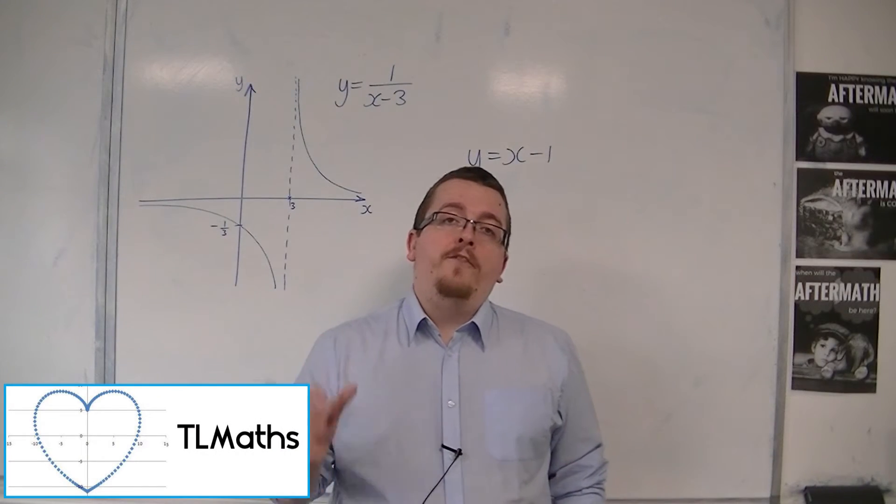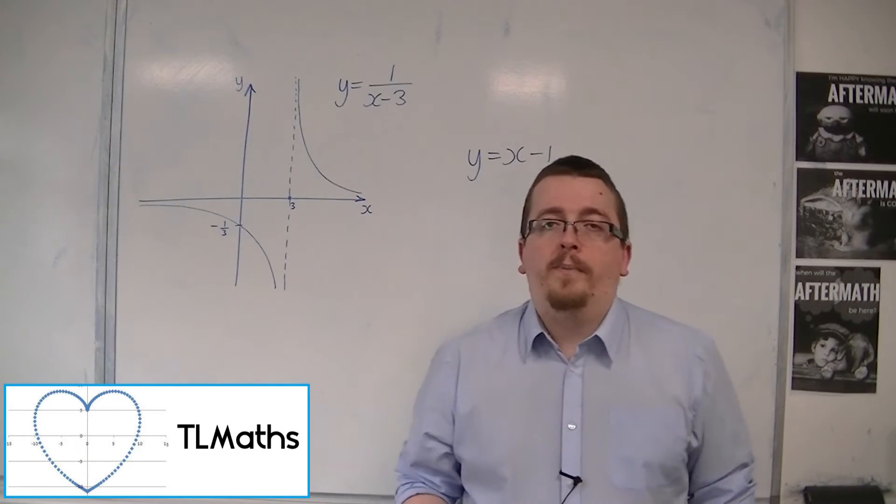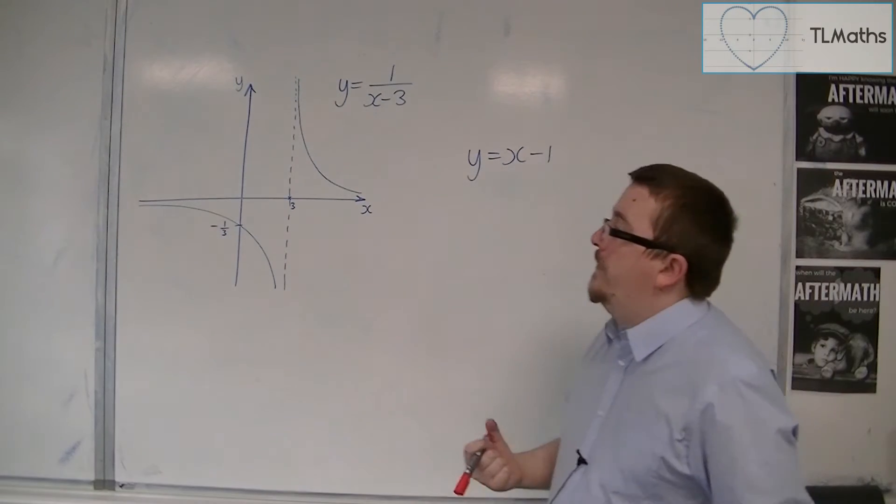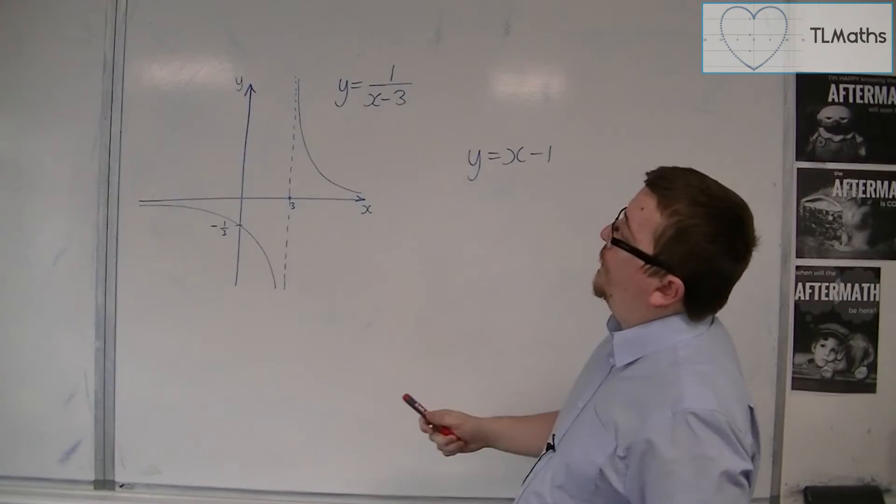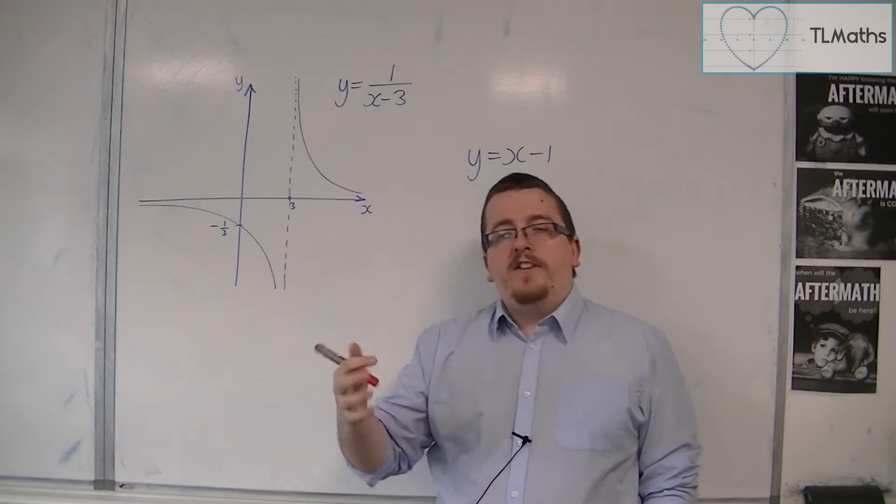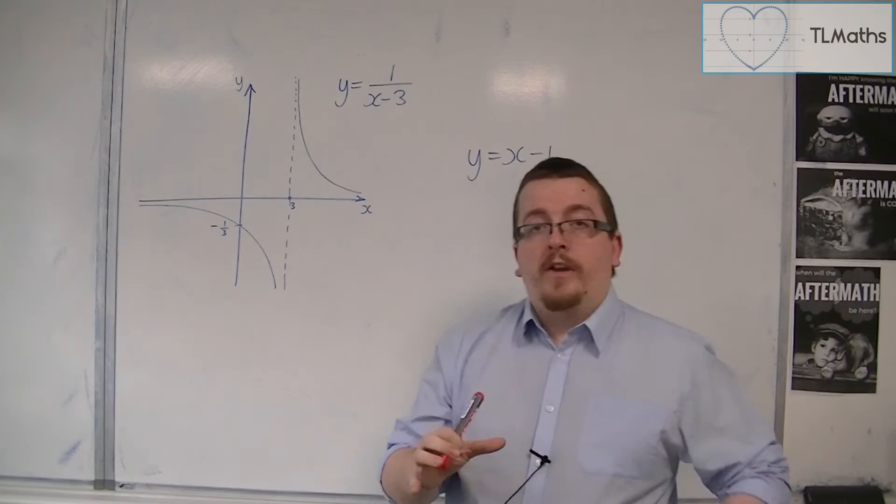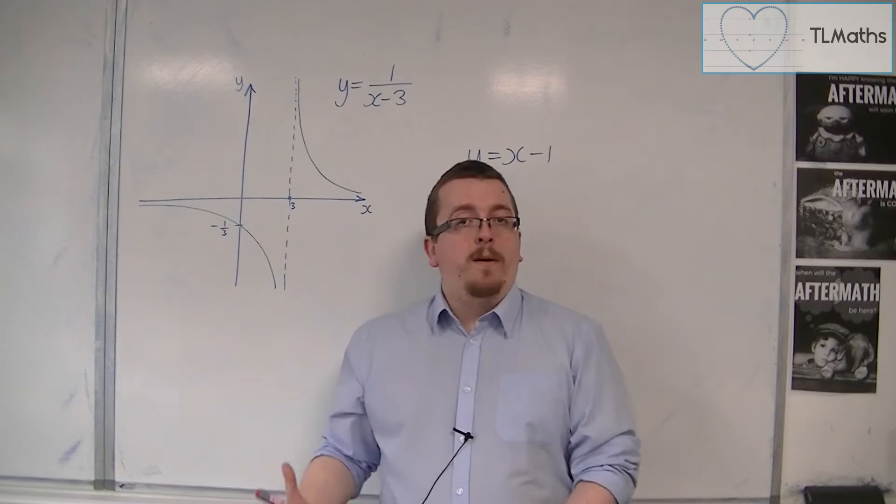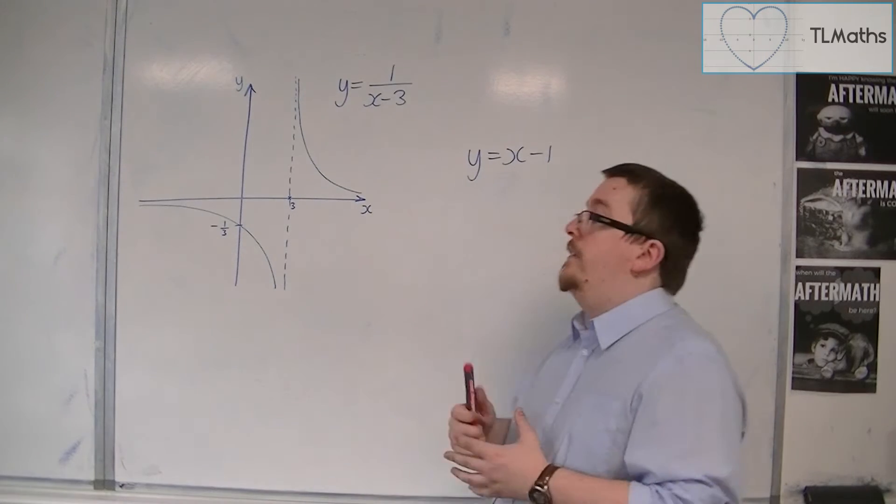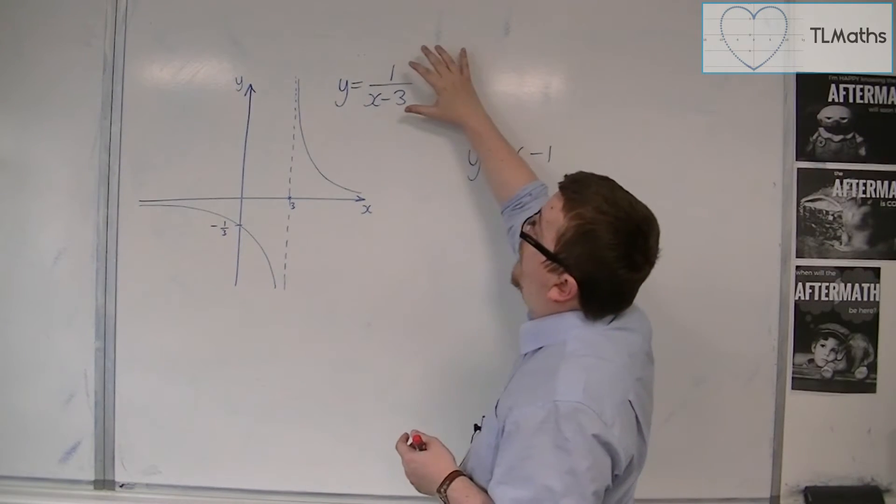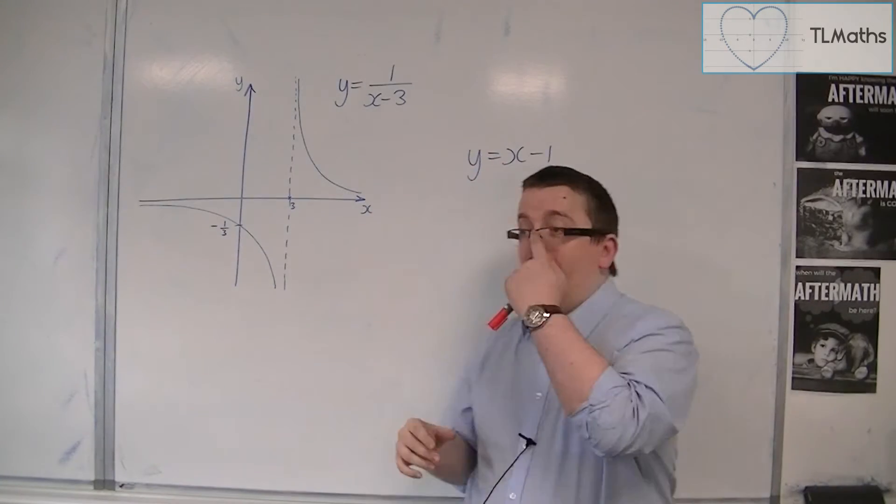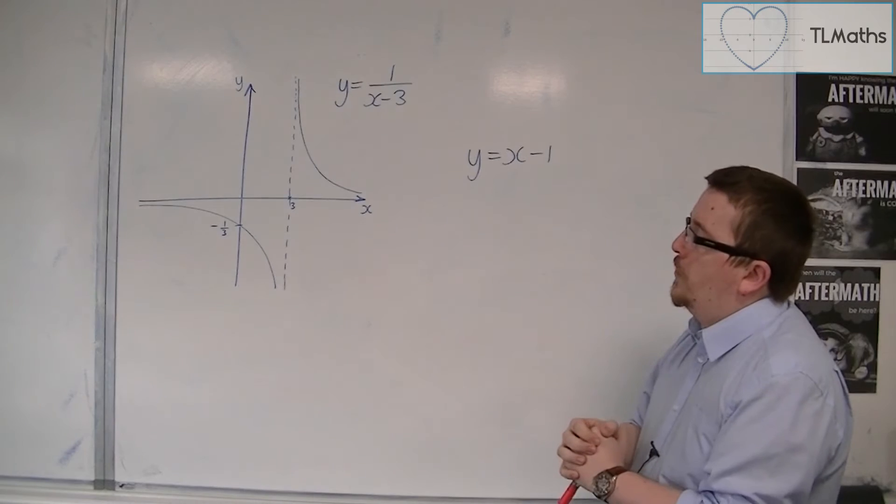Some of the questions that you might find when you're working through past papers involve a curve that has been given to you. And sometimes it's a rational function, like y equals 1 over x minus 3. It's known as a rational function because a rational number is one that is written as a fraction. Here we have effectively a polynomial over a polynomial, so it's written as a fraction and known as a rational function.